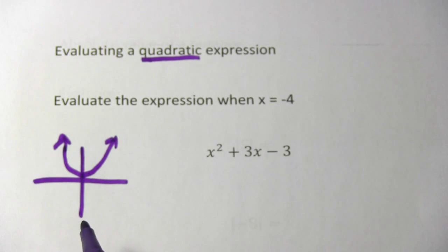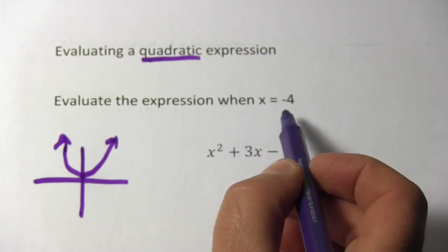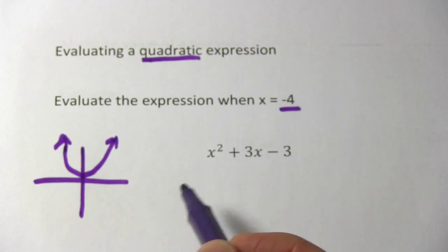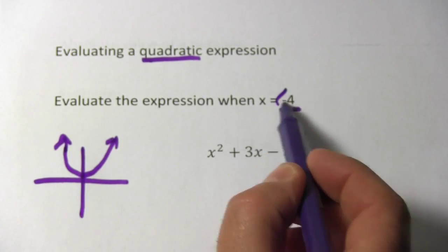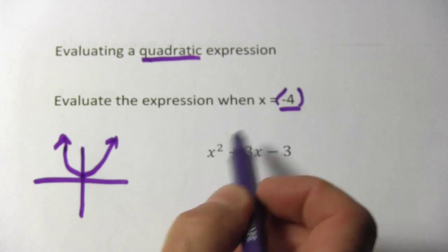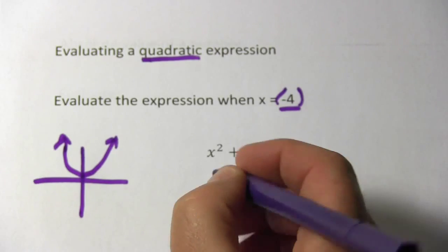So that's a quadratic. To evaluate a quadratic, we're just going to take this value and substitute it in wherever you see x, and I would put that in parentheses and just replace x with that in parentheses. So let's try that here.